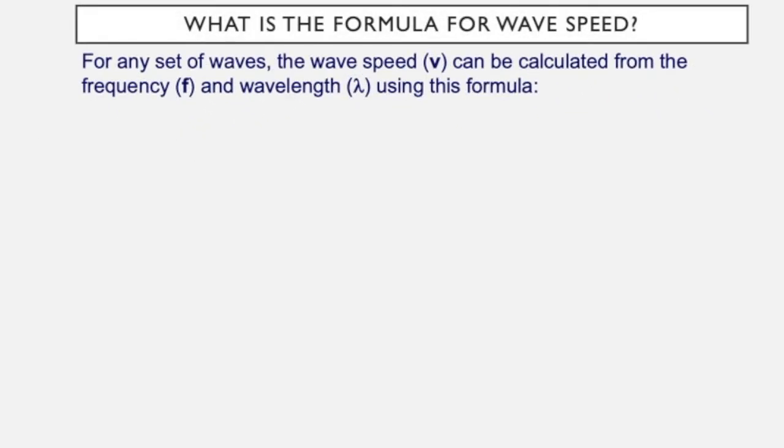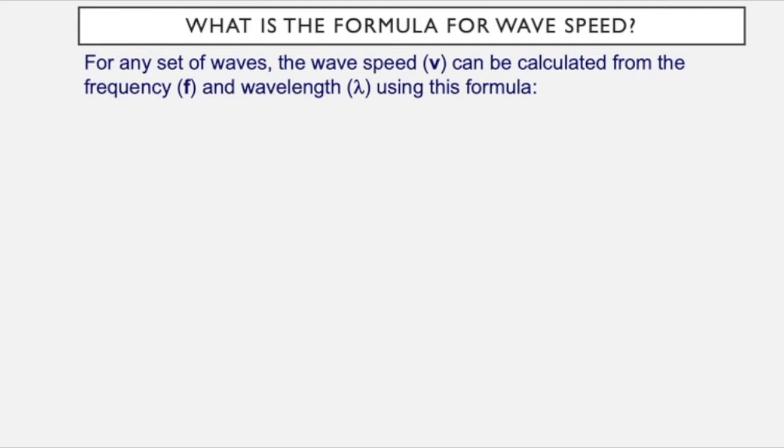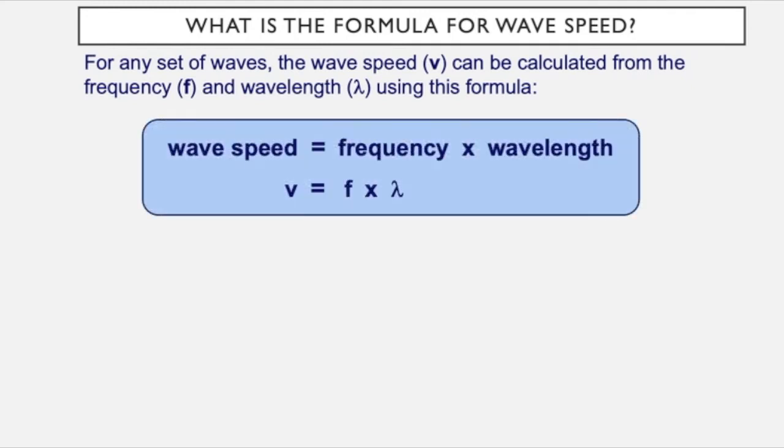So what's the formula for wave speed? For any set of waves, the wave speed v can be calculated from the frequency f and the wavelength lambda using this formula: wave speed equals frequency times wavelength. V equals f times lambda.